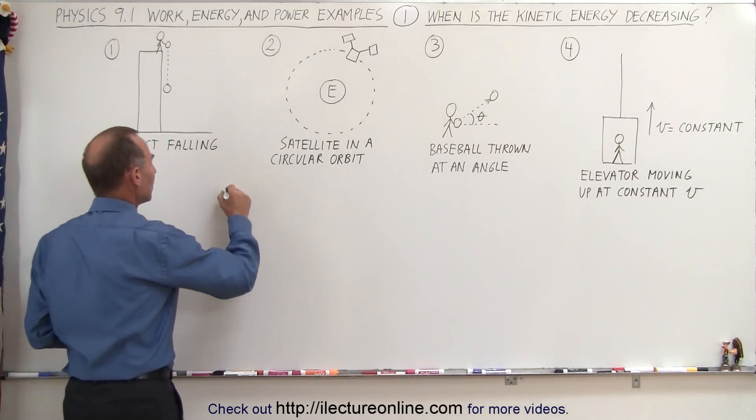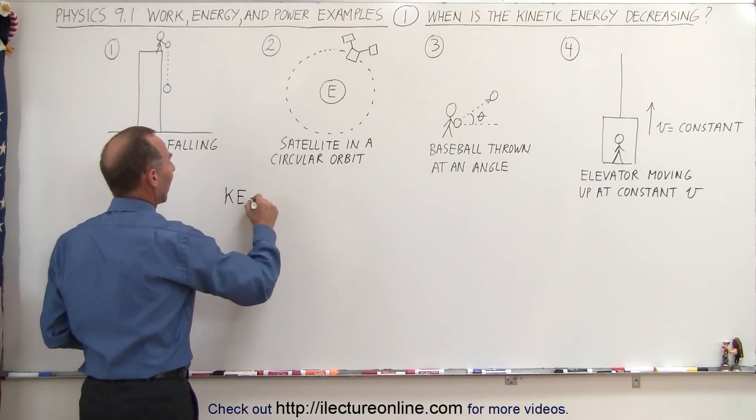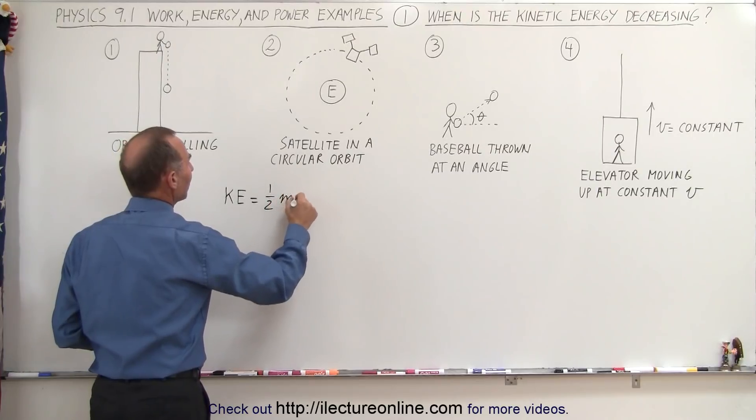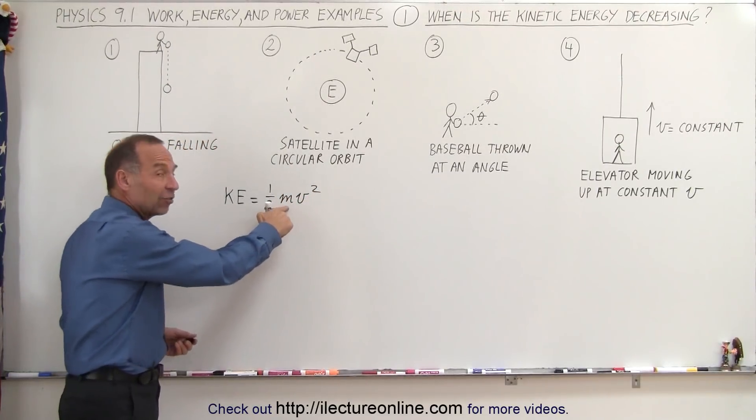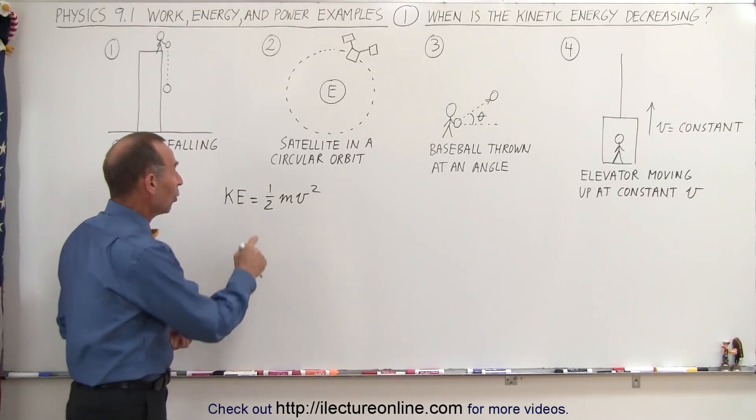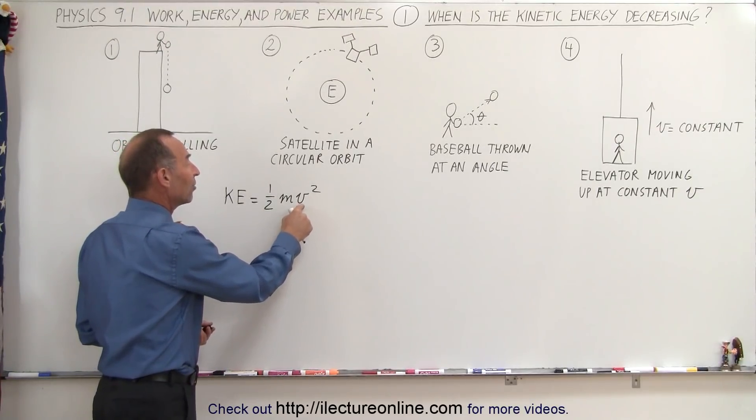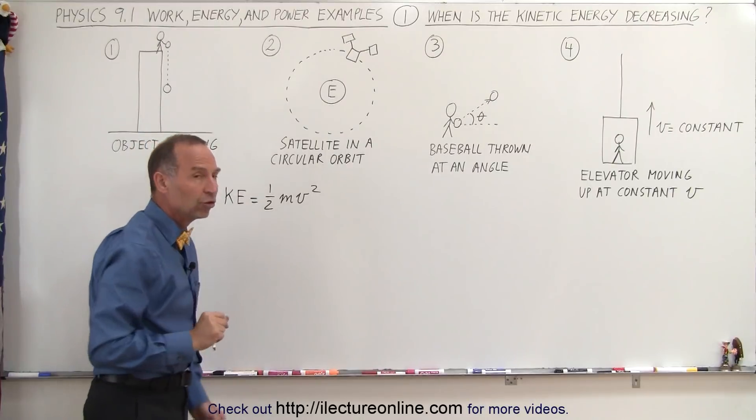We know that the kinetic energy is defined as KE = ½mv², which means that since the mass of an object doesn't change, only the velocity has an effect on how the kinetic energy will change.